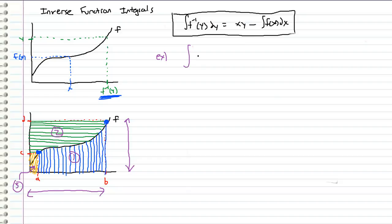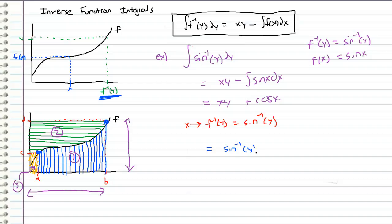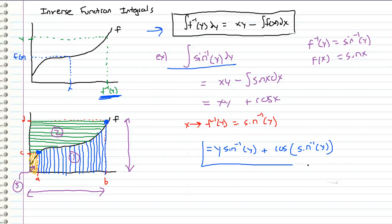You can apply this to other examples as well. Let's say we wanted to evaluate the integral of sine inverse of y. In this case, f inverse of y equals sine inverse of y, and by definition f of x equals sine of x. So all we have to do is plug into our equation: this equals xy minus the integral of sine of x dx, which equals xy plus cosine of x. Then we change our x's to f inverse of y's, which is just sine inverse of y. So we get sine inverse of y times y plus cosine of sine inverse of y. Instead of using integration by parts, we used this formula and were able to do that really, really fast.